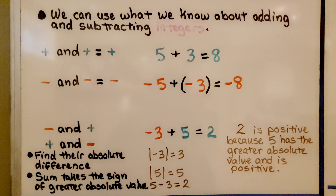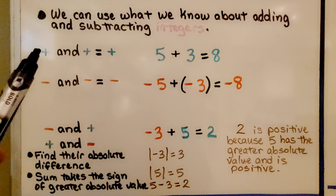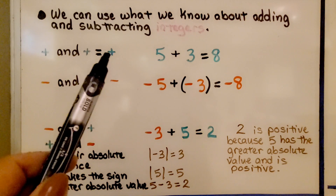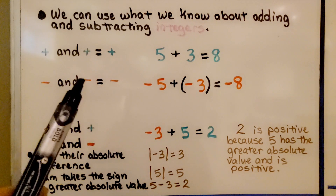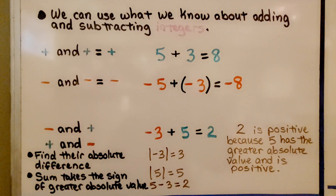We can use what we know about adding and subtracting integers. If we're adding a positive and a positive, the sum will be positive. If we're adding a negative and a negative, the sum will be negative.